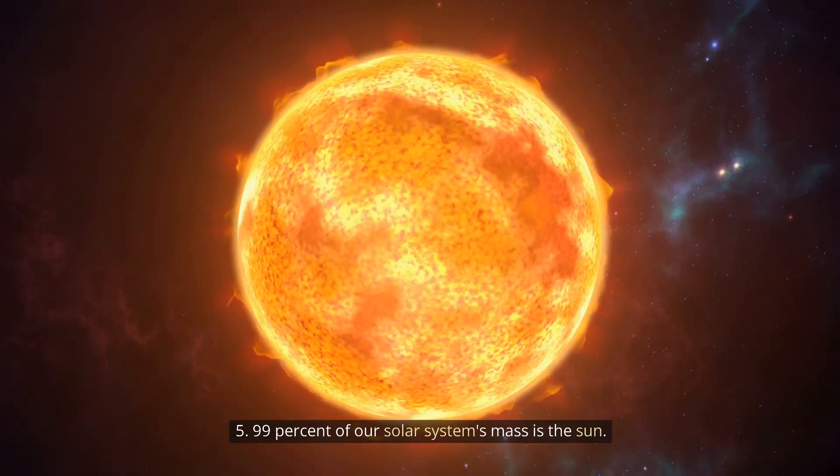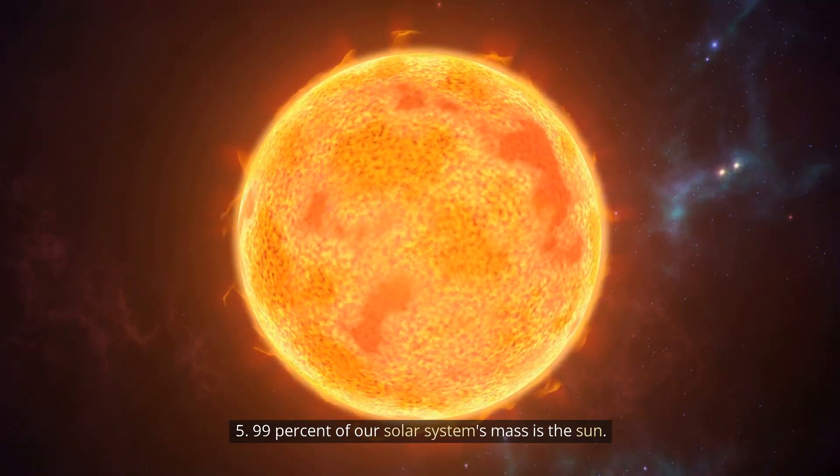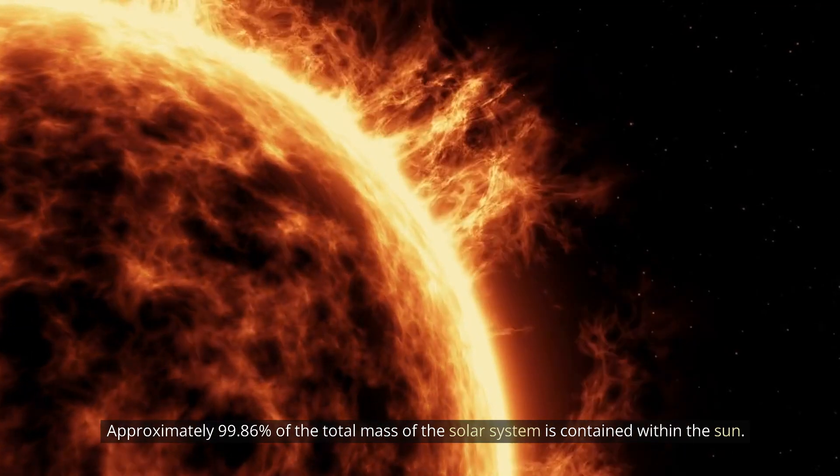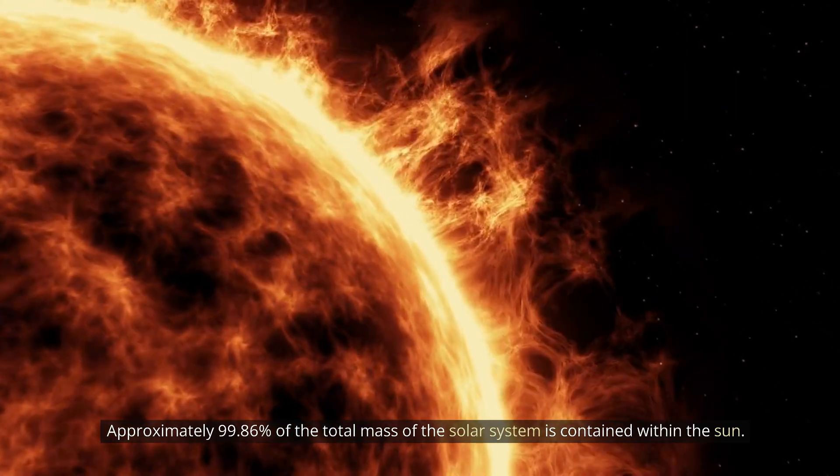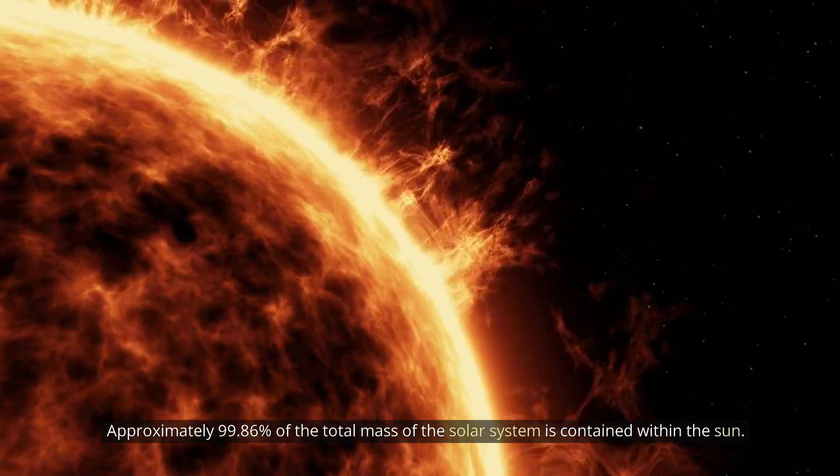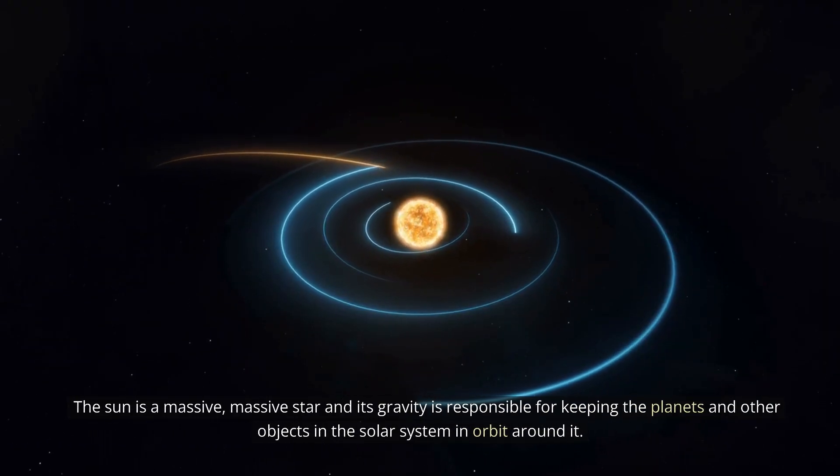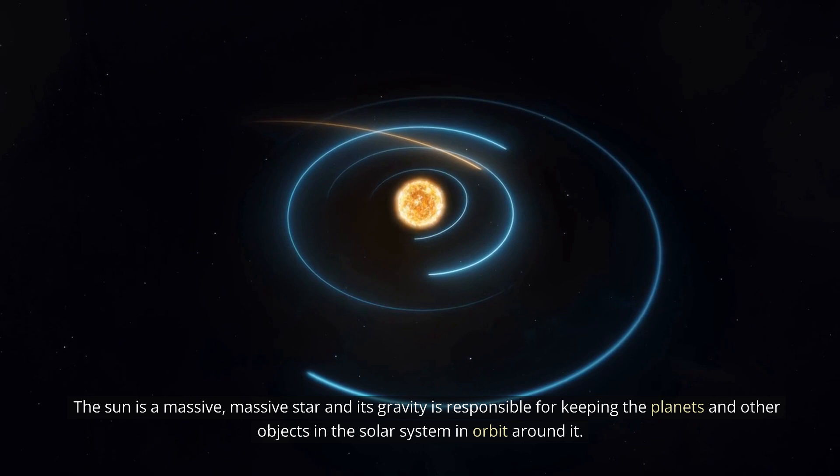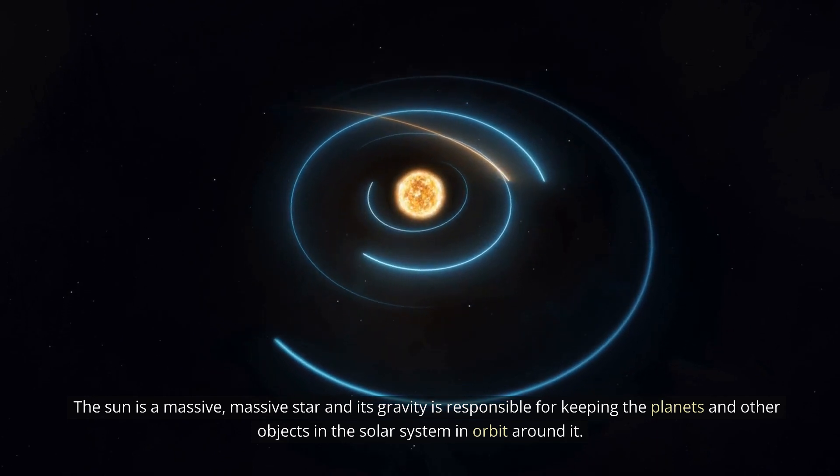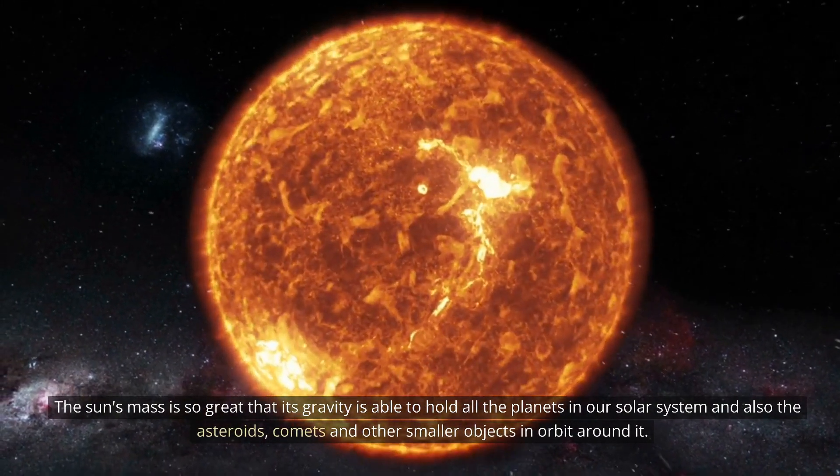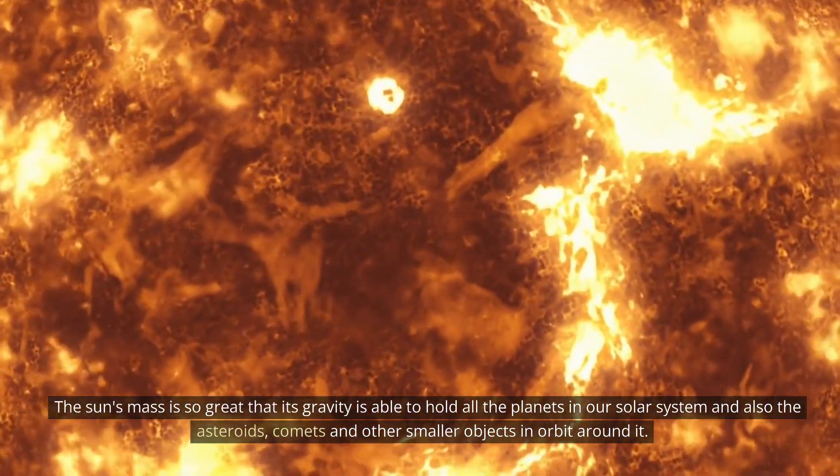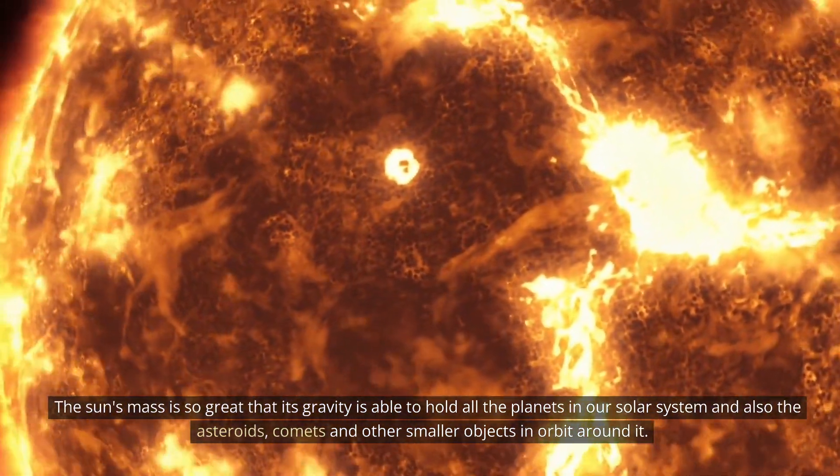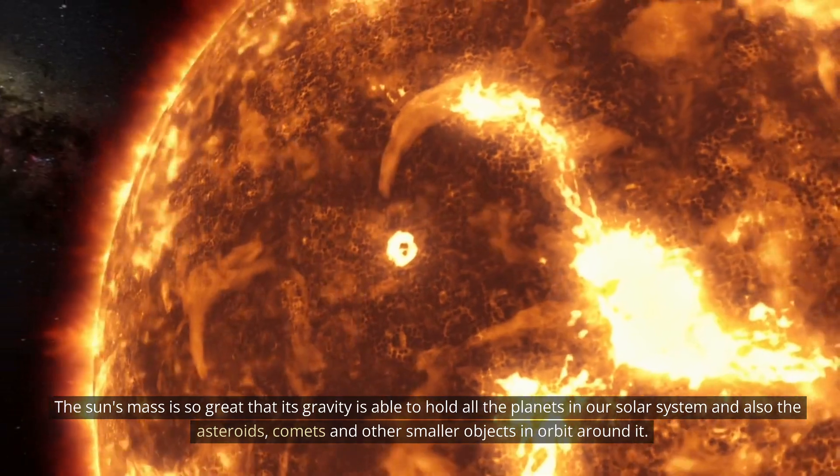5. 99% of our solar system's mass is the Sun. Approximately 99.86% of the total mass of the solar system is contained within the Sun. The Sun is a massive, massive star and its gravity is responsible for keeping the planets and other objects in the solar system in orbit around it. The Sun's mass is so great that its gravity is able to hold all the planets in our solar system and also the asteroids, comets and other smaller objects in orbit around it.